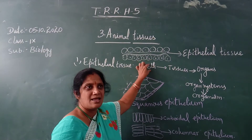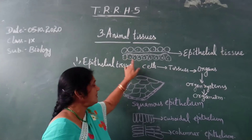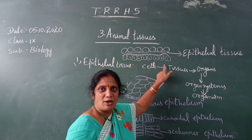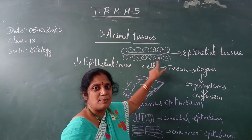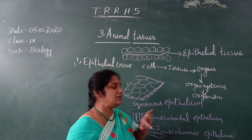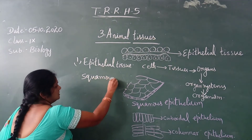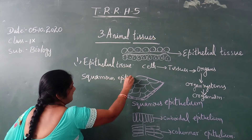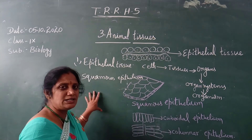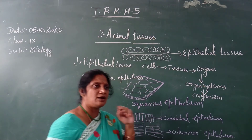Under the microscope you will see that the skin contains layers, and the cells are arranged uniformly. This is called epithelial tissue. Depending upon the function, it is of two main types. The first one is called squamous epithelial — if the epithelial tissue contains only one layer of cells, it is called squamous epithelial.